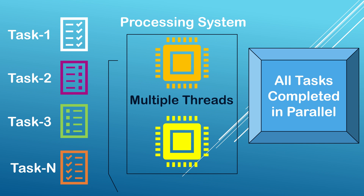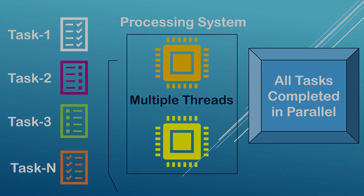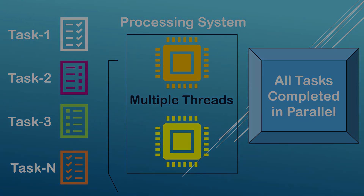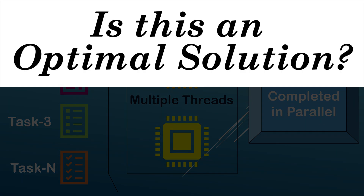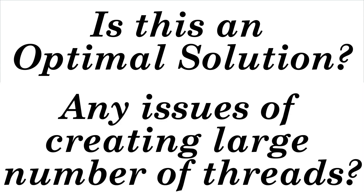Completing the task in one minute, which was earlier taking 10 minutes, is a huge improvement — but can it be improved further, or is it the optimal solution? Are there any issues with creating multiple threads at a time?